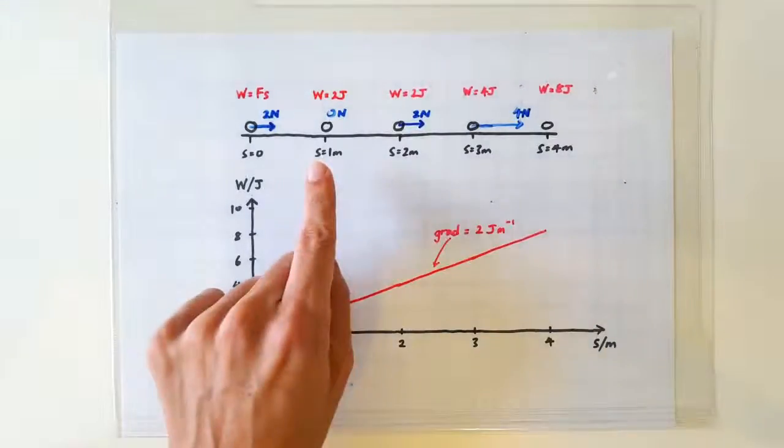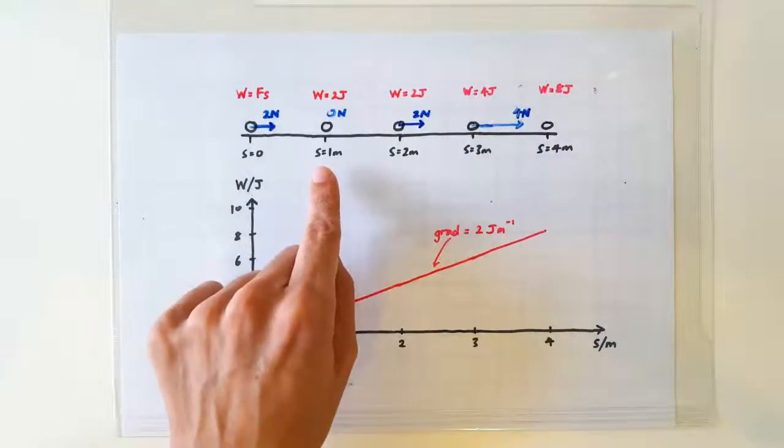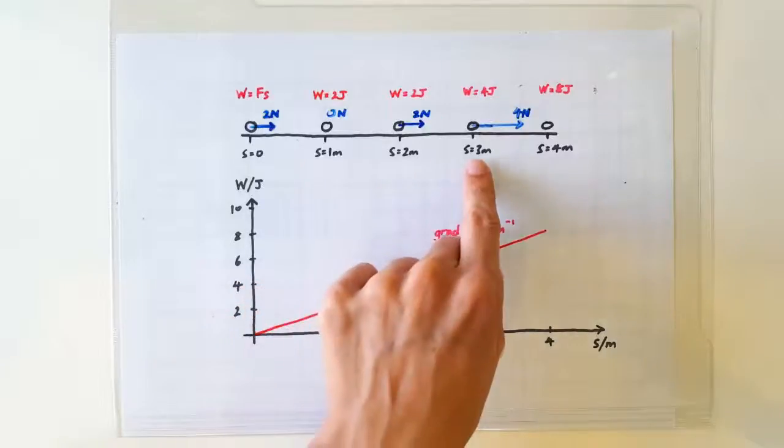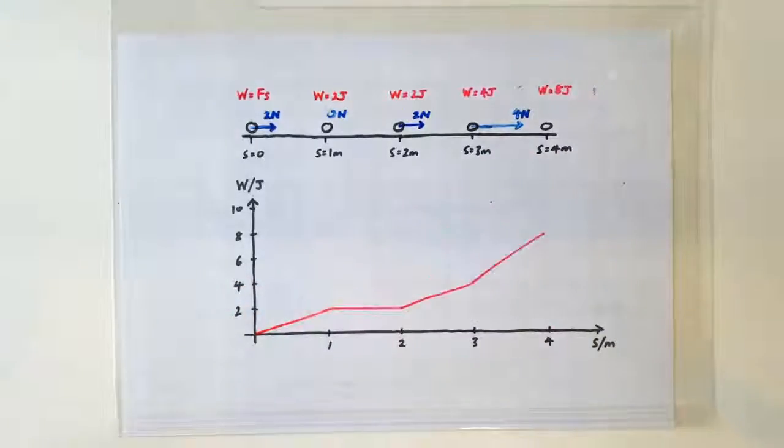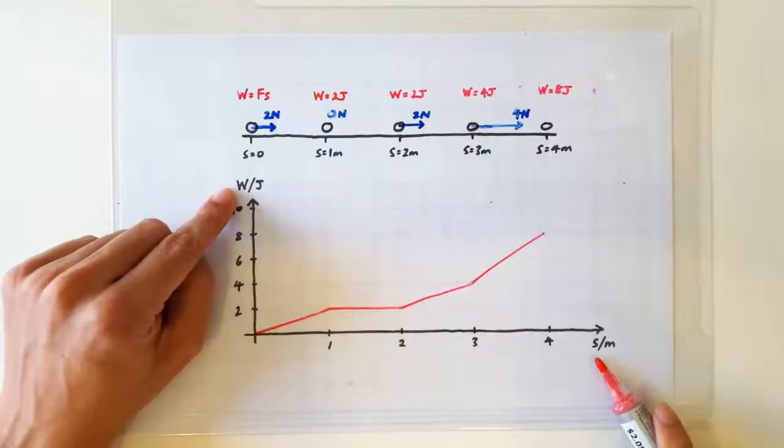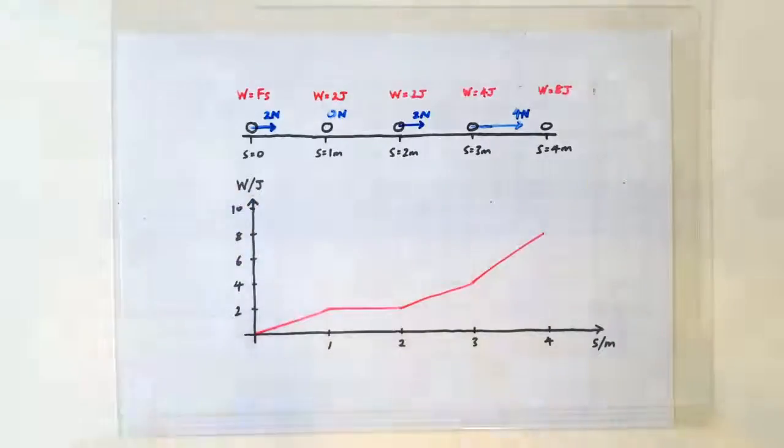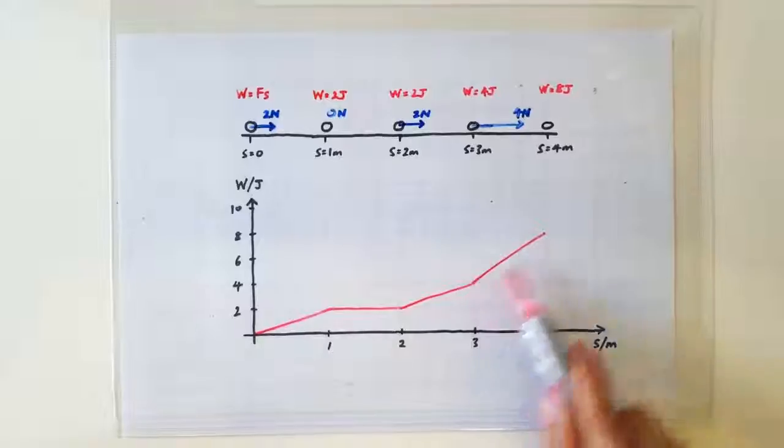Then the total work done at each position is going to be 2 joules here, 2 joules here, 4 joules here, and 8 joules here. If you plot the energy against displacement graph, you are going to get 4 straight line segments.